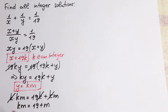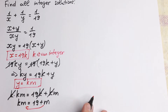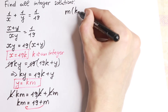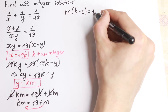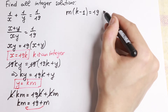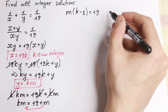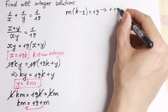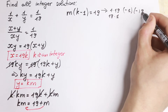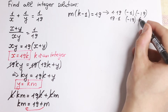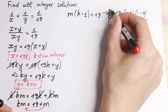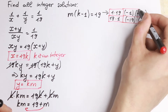We can factor m from here by bringing m to the left hand side. As a result we'll have m times (k minus 1) equal to 19. Finally we have factored our equation. Since 19 is prime, we can express this as 1 times 19, 19 times 1, minus 1 times minus 19, and minus 19 times minus 1 — four factor pairs.